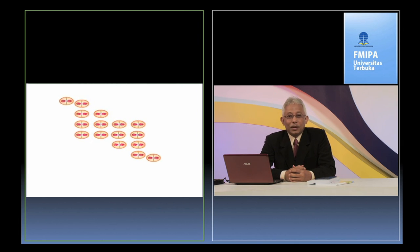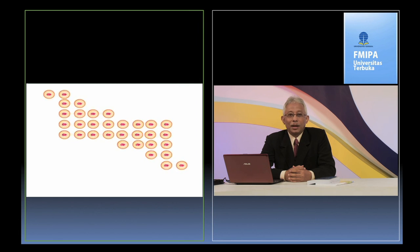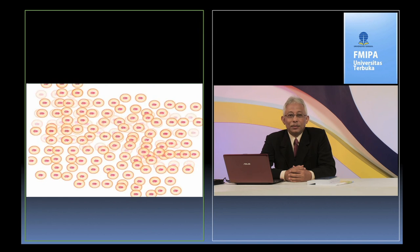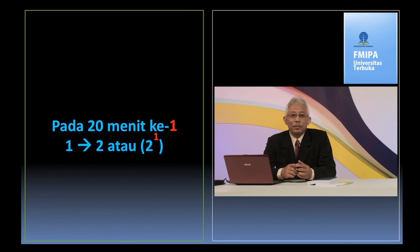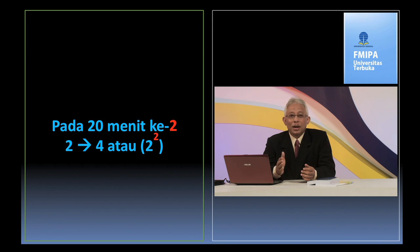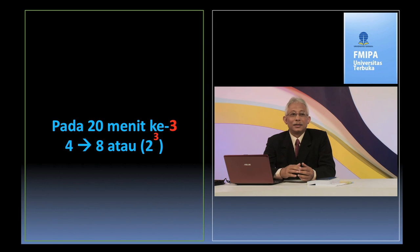Saudara mahasiswa, waktu yang diperlukan oleh satu sel mikroorganisme untuk membelah menjadi dua sel dinamakan waktu generasi. Waktu generasi ini menentukan jumlah sel pada akhir pertumbuhan mikroorganisme. Waktu generasi yang berbeda akan menghasilkan jumlah sel yang berbeda pula. Jadi, jika suatu mikroorganisme memiliki waktu generasi 20 menit, maka pada 20 menit pertama dari satu sel akan membelah menjadi dua sel atau 2^1. Pada 20 menit kedua, dari dua sel akan membelah menjadi empat sel atau 2^2. Pada 20 menit ketiga, dari empat sel akan membelah menjadi delapan sel atau 2^3, demikian seterusnya.